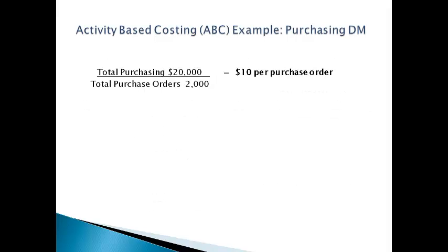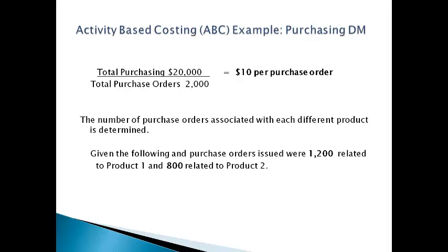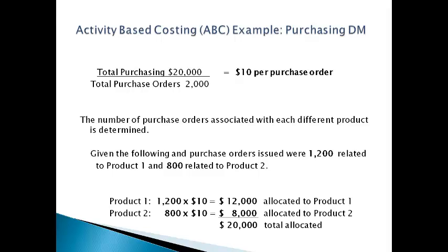Let's add some numbers to our example. Assume the overhead rate is $10 per purchase order issued. The number of purchase orders related to each product is then multiplied by the cost for one purchase order to get the cost allocated to each product. $12,000 is related to product one and $8,000 is related to product two.